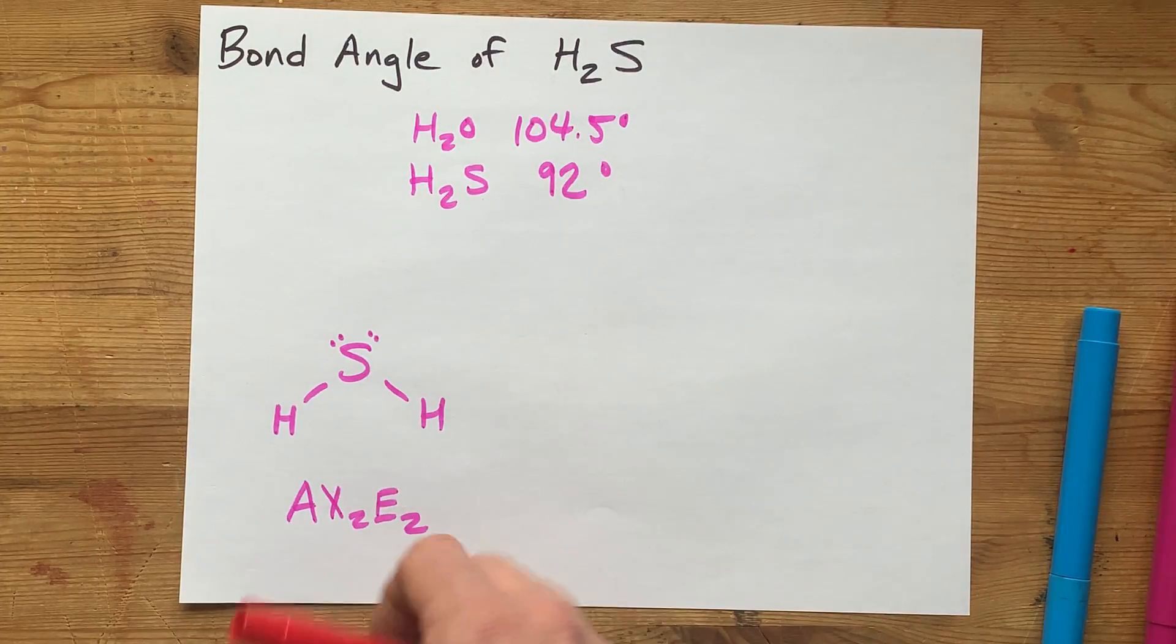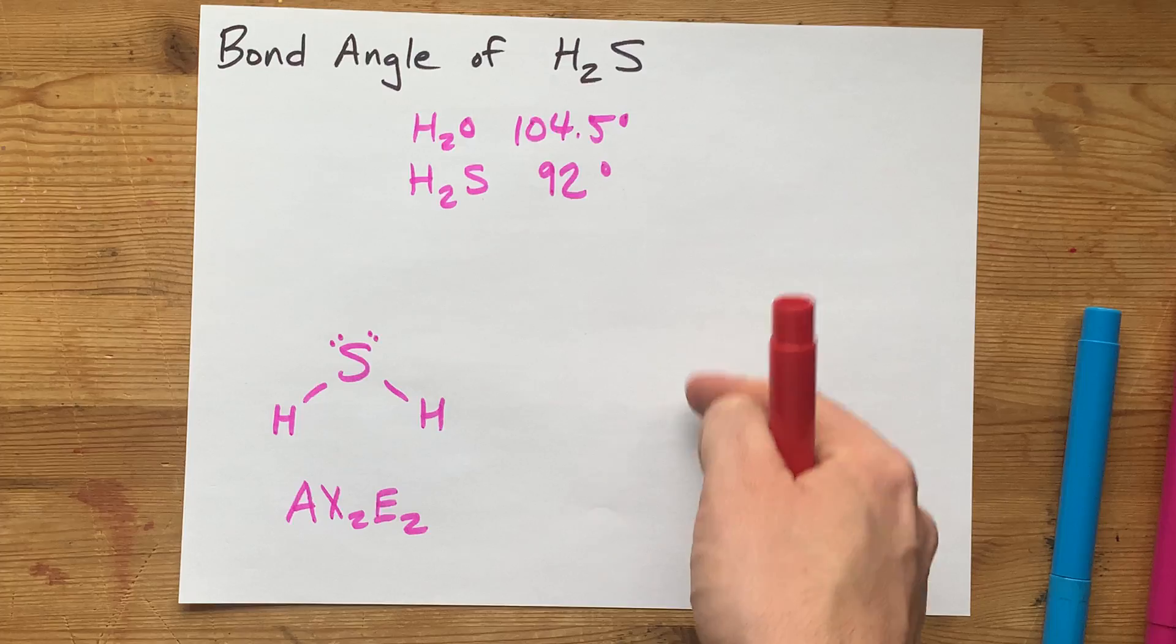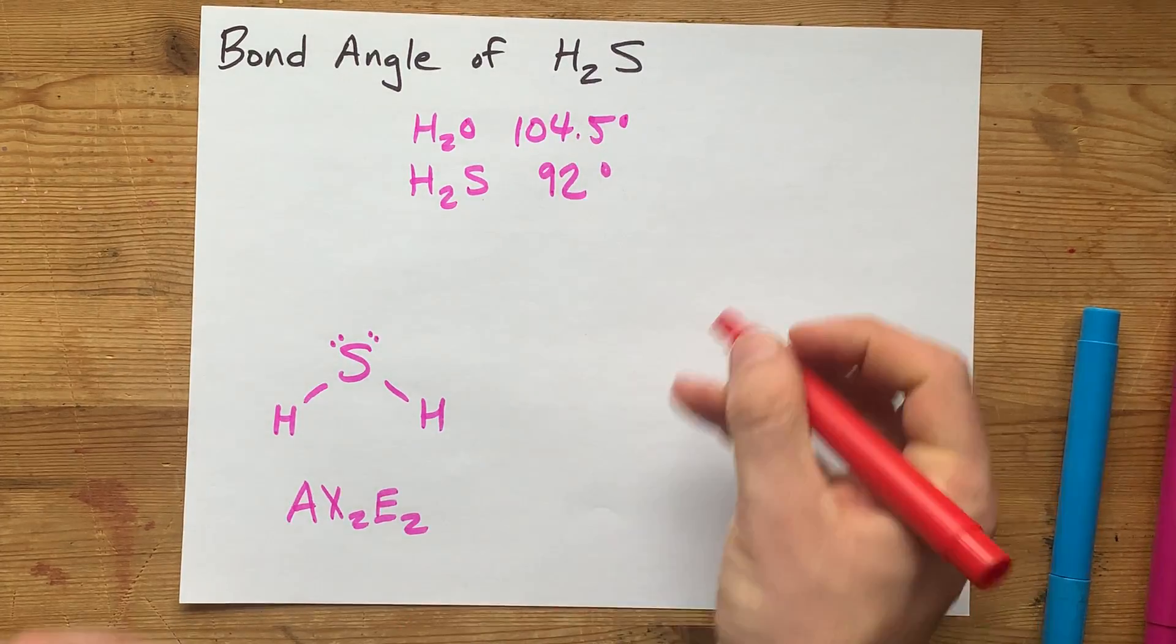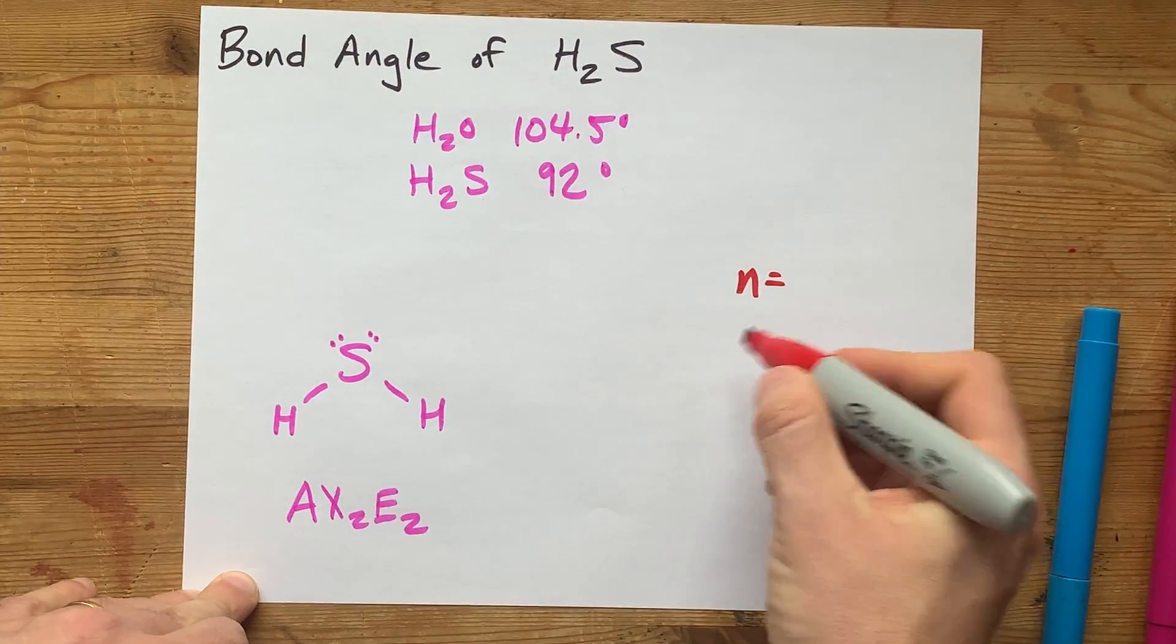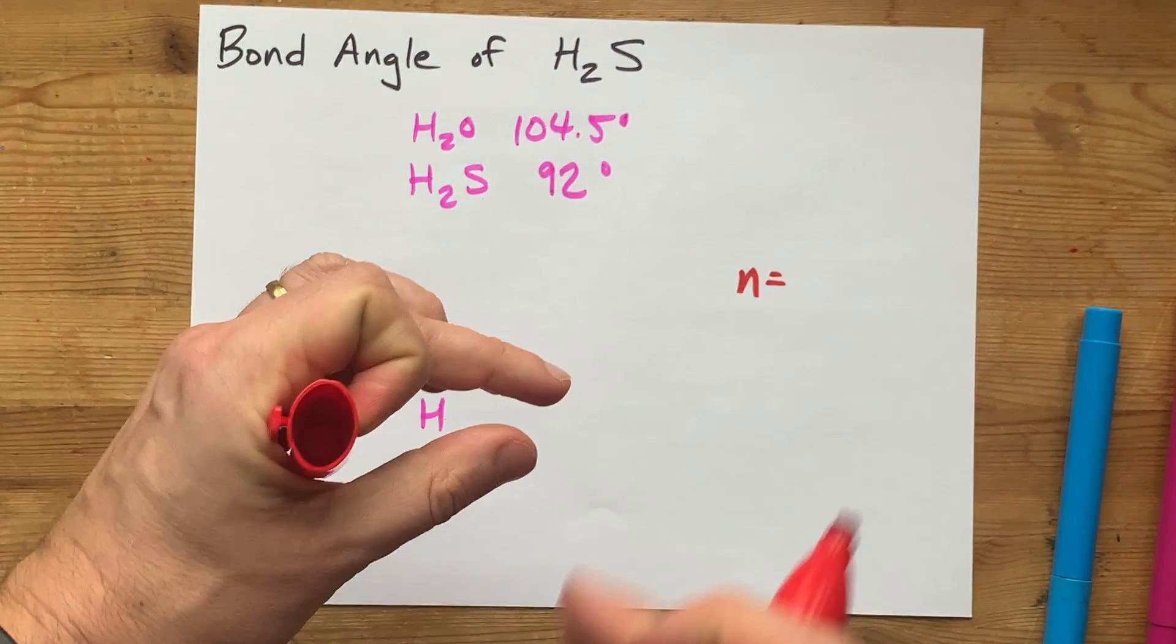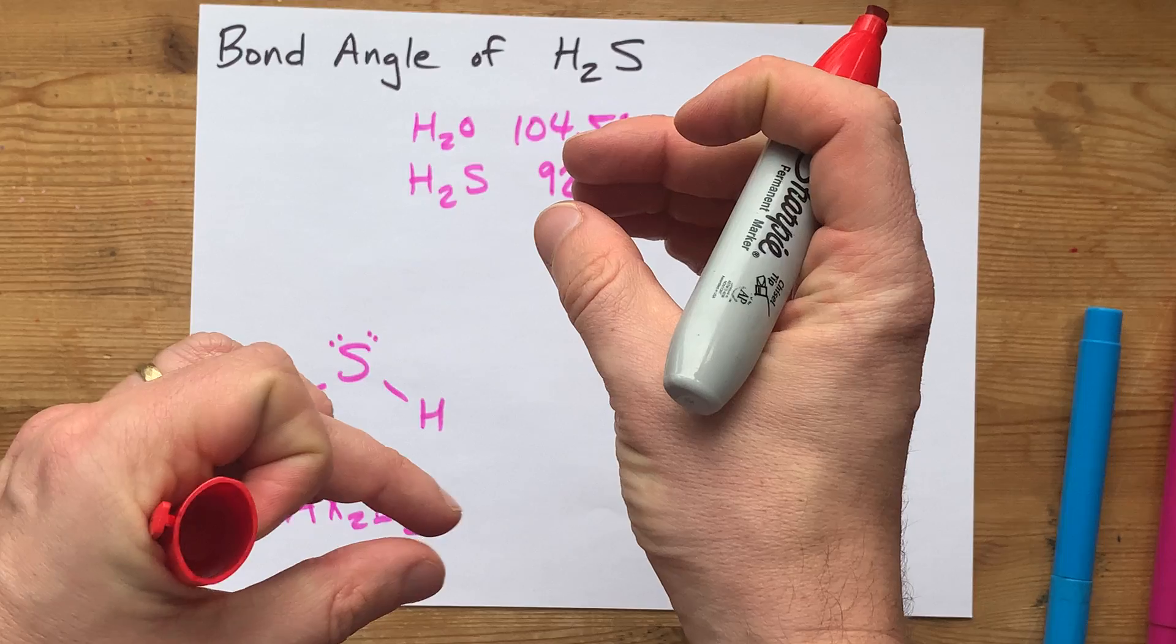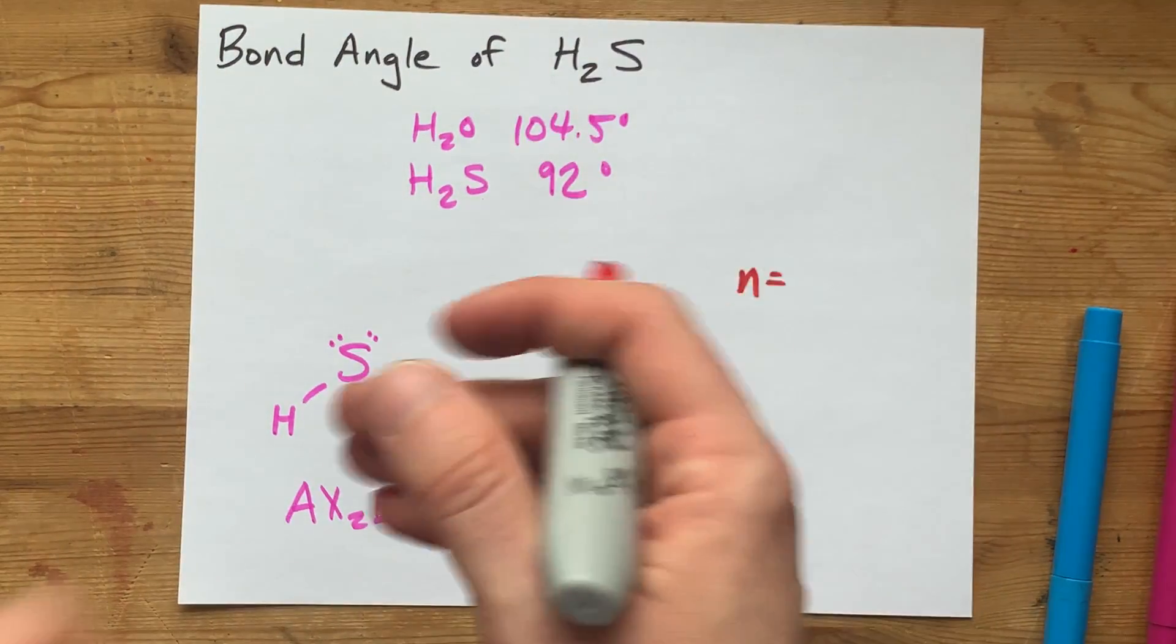The actual answer is that as you go down the periodic table, the N, or principal quantum number, is getting larger, and the space between the S and P orbitals is getting larger as well.